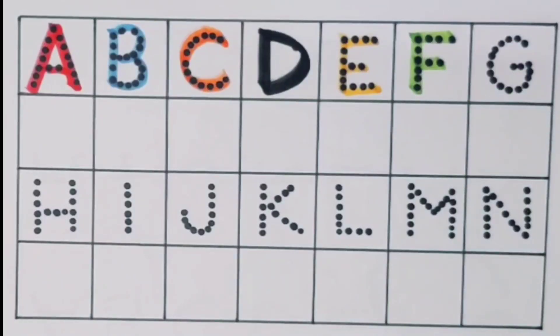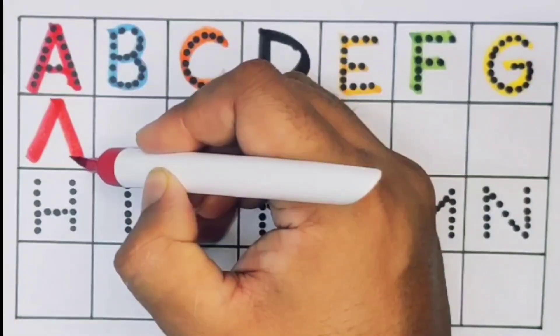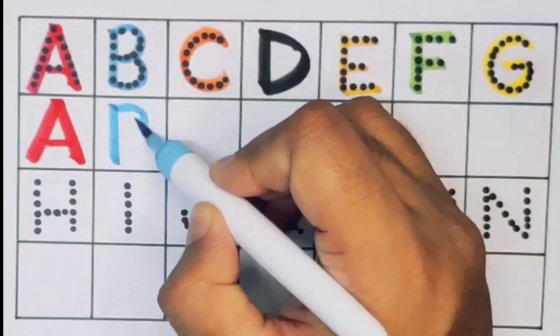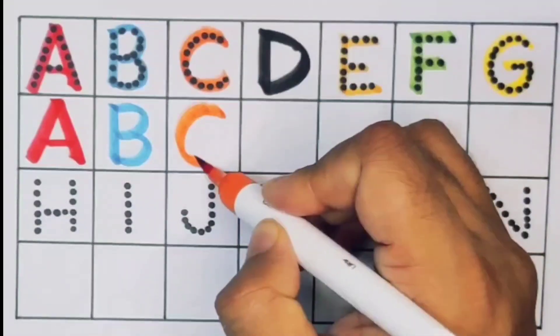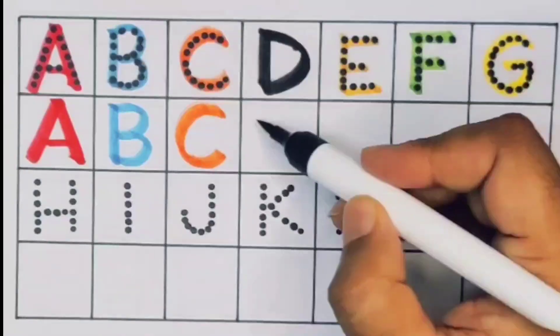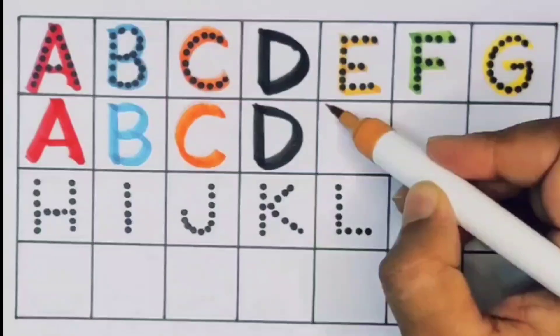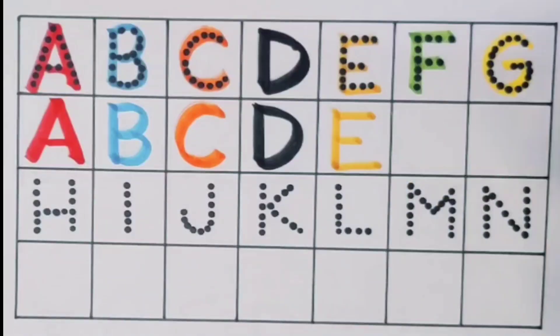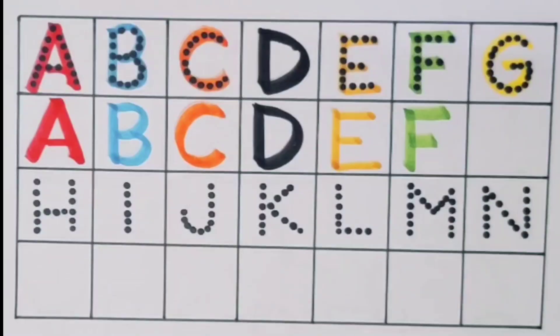Next G, G for gorilla. Repeat again: A, A for aeroplane. Next B, B for bus. Next kids, C, C for cow. Next D, D for drum. Next E, E for egg. Next F, F for fire. Next kids, G, G for gorilla.